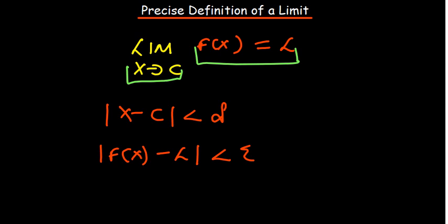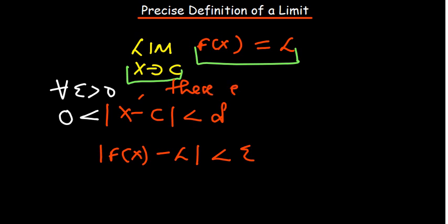So you're already able to remember that within 30 seconds. There are a few things to add: delta should be greater than 0, and for every epsilon greater than 0 — that's very important. You also need to mention that there exists a delta, which is also greater than 0.